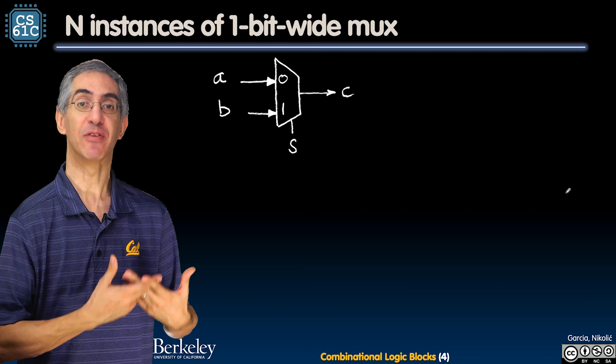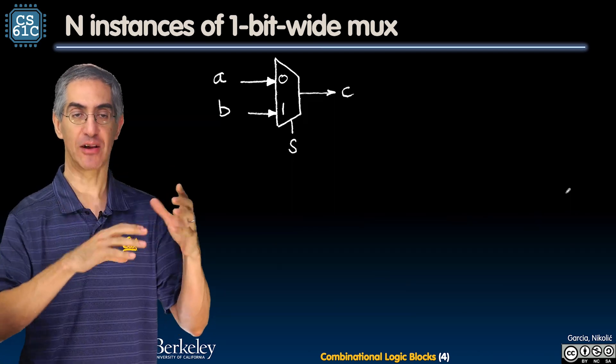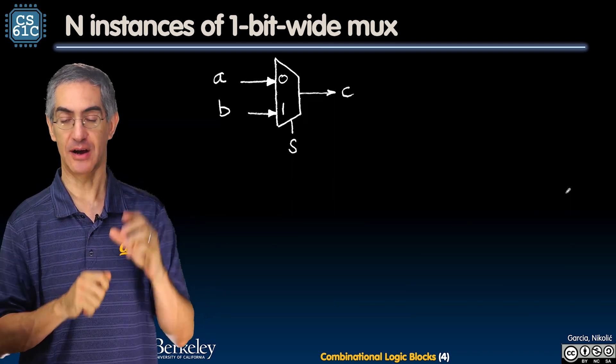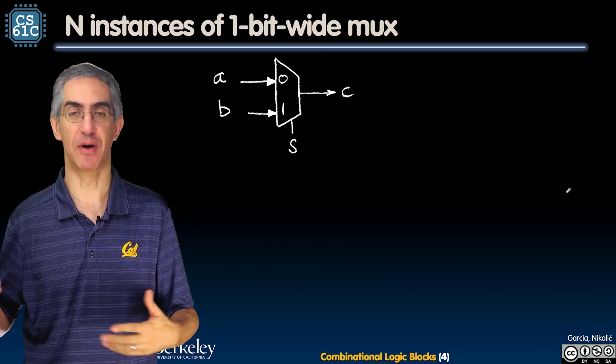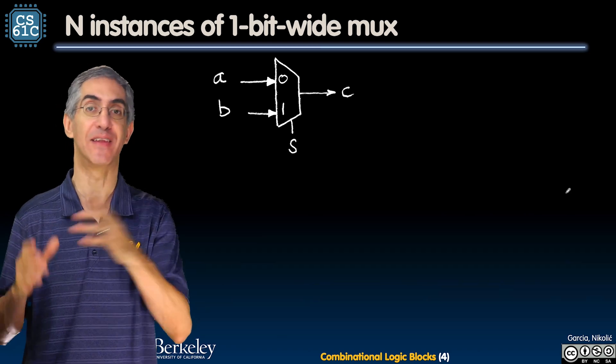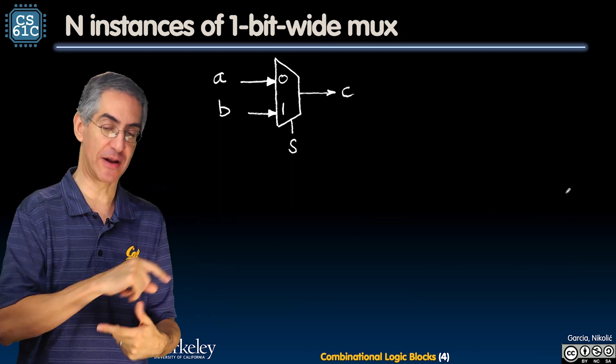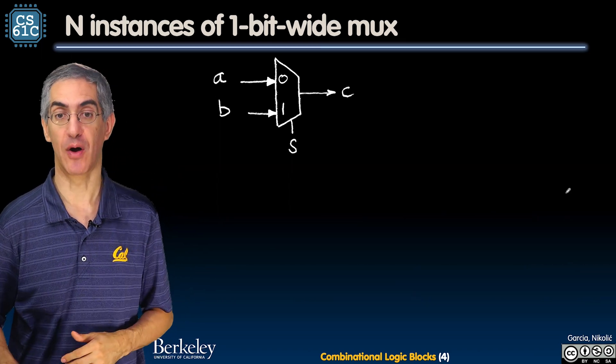So the way we can think about it, that was an N-bit input MUX, so the N-channel input MUX with one signal line. You can think of this as being N instances of a 1-bit wide MUX. So let's actually talk about a 1-bit wide MUX and how to build that. And then maybe we can learn how to build the larger one I showed you in the previous slide of the N-bit wide MUX.